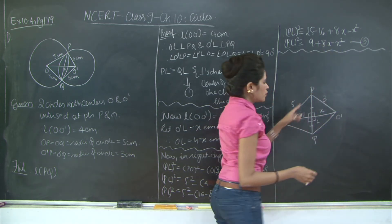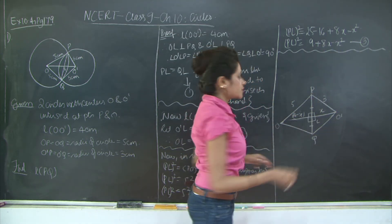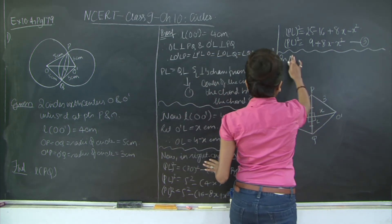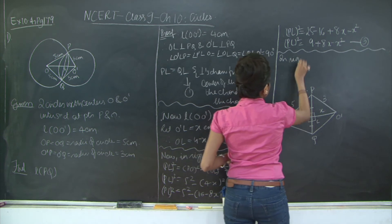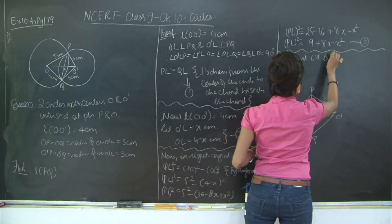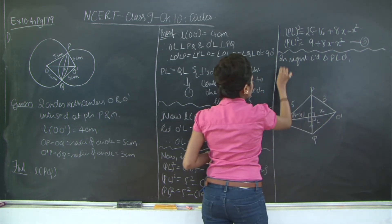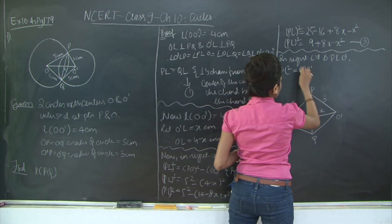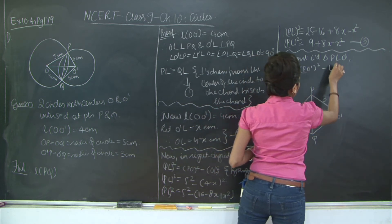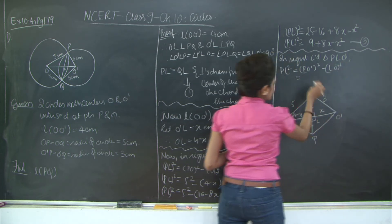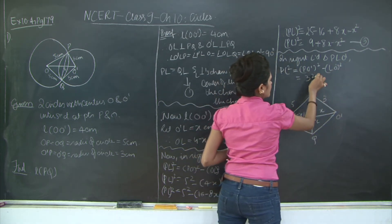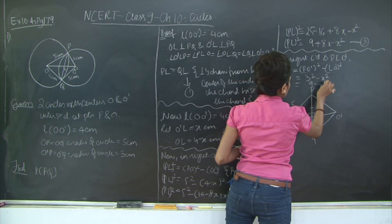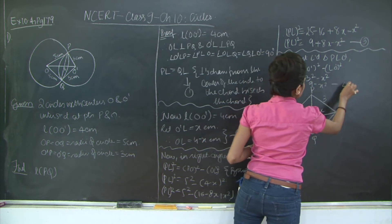Now let us take a look at triangle PLO'. In right angle triangle PLO', PL squared equals PO' squared minus LO' squared, which is 3 squared minus x squared, equal to 9 minus x squared. Let us mark this as statement number 4.